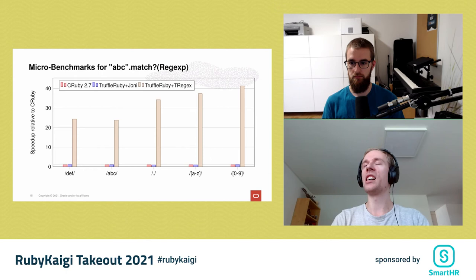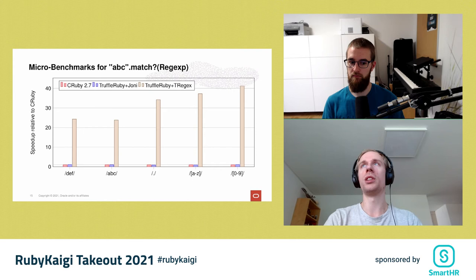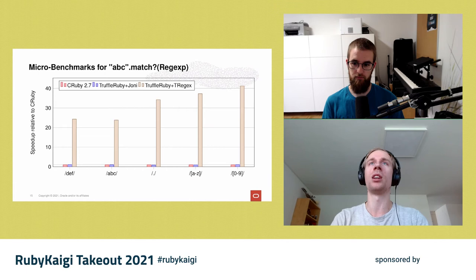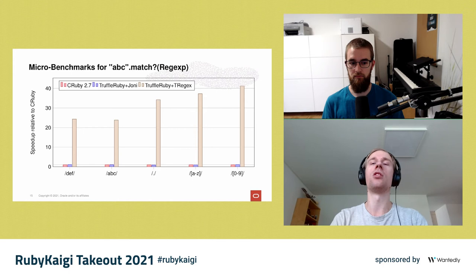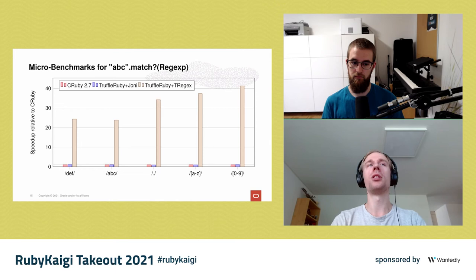The last contributing factor is that T-Regex is a Truffle language and TruffleRuby is also a Truffle language — they both run in the same process on GraalVM. That means the Graal compiler can see through both languages, inline through them, and optimize them together. So the Ruby logic around the regular expression — encoding checks, constructing match data, etc. — is inlined together with the T-Regex logic, and all of it is combined into a single piece of machine code. That's really how we get this very large speedup. These are micro-benchmarks to illustrate how much just-in-time compiling regular expressions can gain.